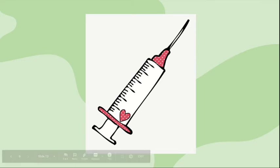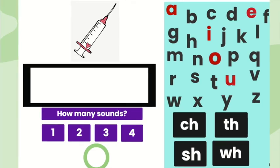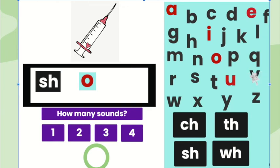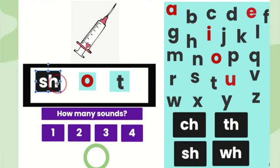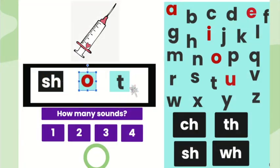This word is shot. Let's create the word shot. The first sound in shot is sh, so I will need the letters S-H. The middle sound in shot is ah, so I will need the letter O. The final sound in shot is t, so we will need the letter T. There are three sounds in the word shot.